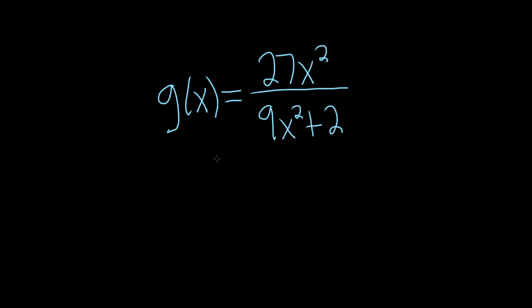In this problem we have a rational function and we want to know what is the horizontal asymptote. So whenever you have a rational function and you're looking for horizontal asymptotes you want to just focus on the degree.